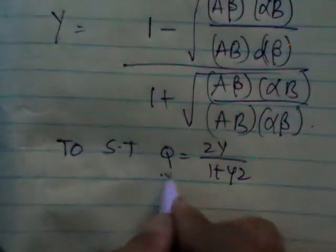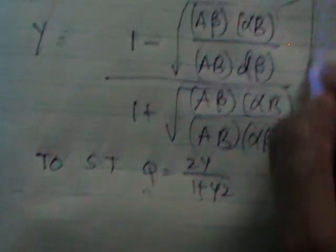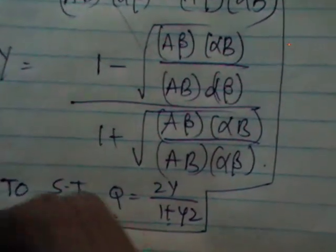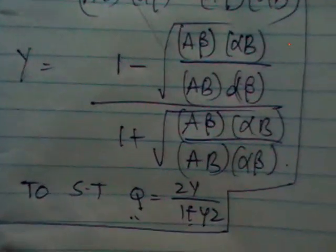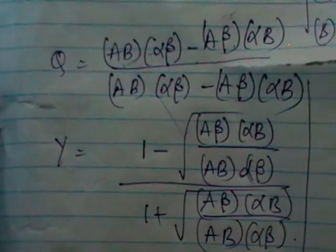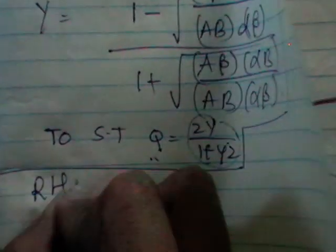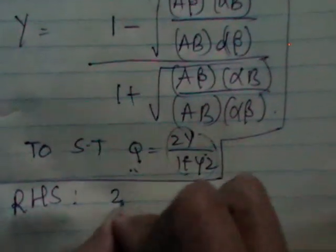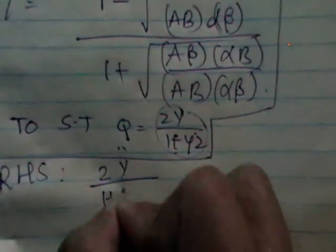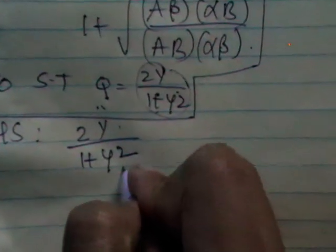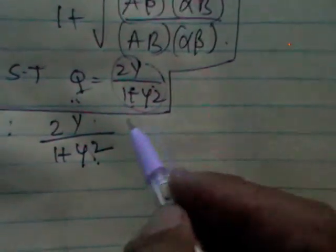So you need to show LHS is equal to RHS and you have LHS as the single term, RHS as a combination of, as a big term, so simplifying RHS is easy to get the corresponding LHS. Let us consider the RHS which is nothing but 2Y by 1 plus Y square. Let us consider this and simplify this to get Q.